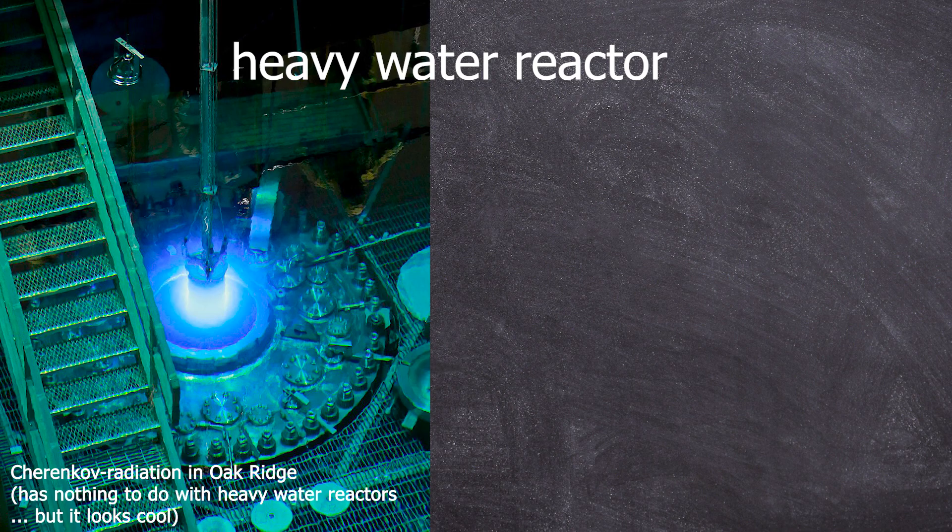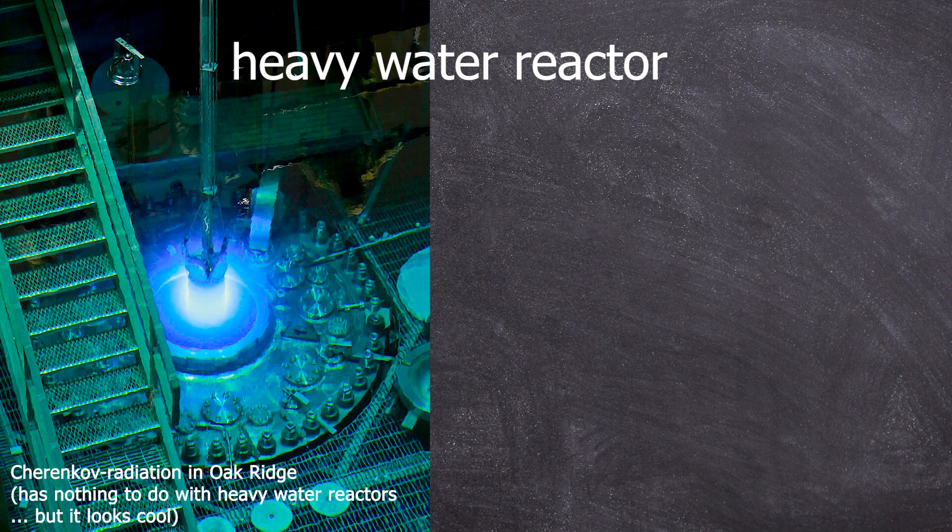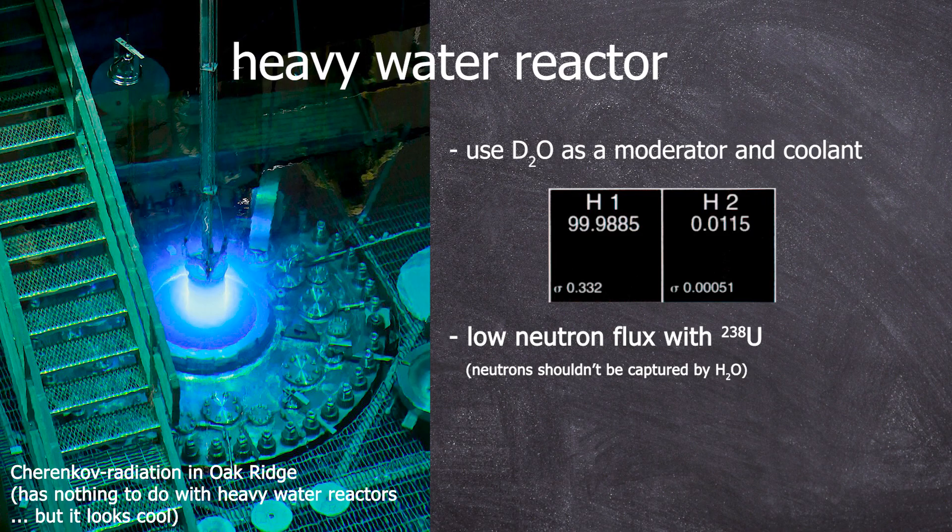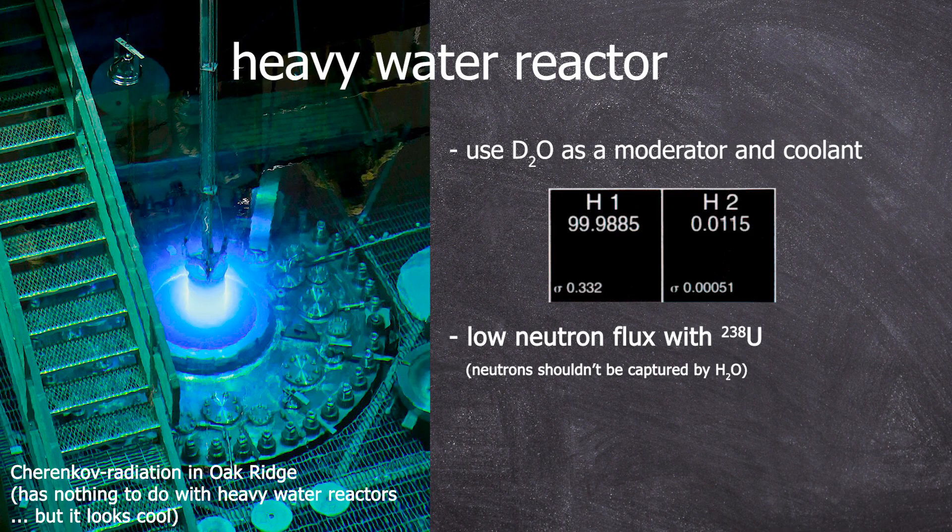Quick note on the advantages of heavy water reactors, for which these pellets were intended. Heavy water reactors use D2O as a moderator and coolant. Deuterium has a lower neutron capture cross-section than normal hydrogen, allowing more neutrons to pass through. This is necessary because natural uranium does not generate as high of a neutron flux as enriched uranium. This means that the neutron flux that we already have should not be absorbed by a relatively strong moderator, like light water.